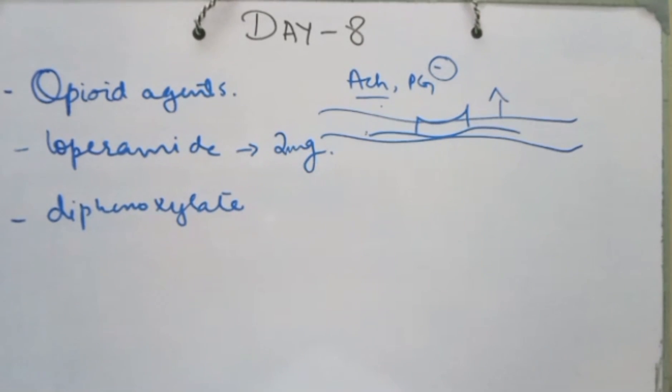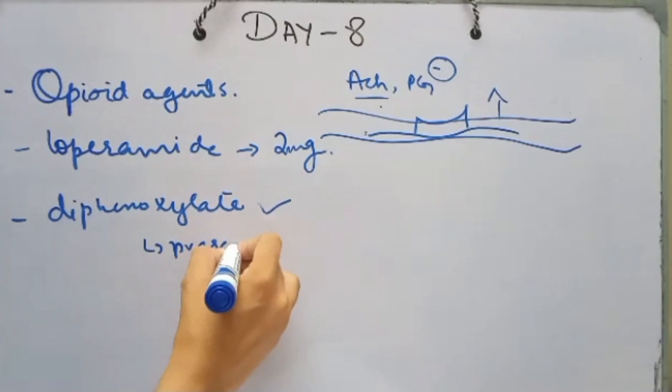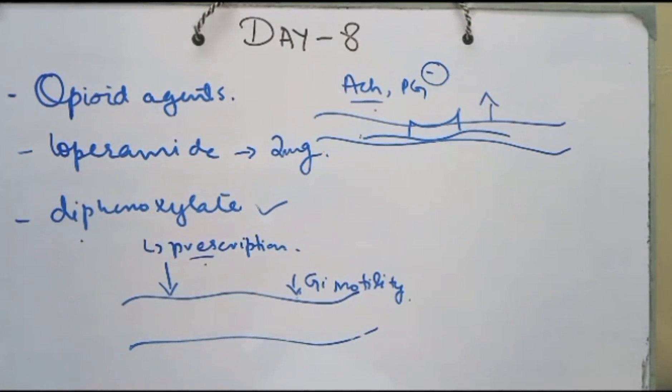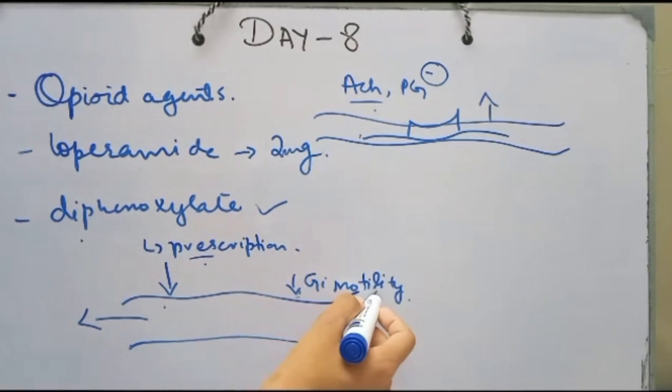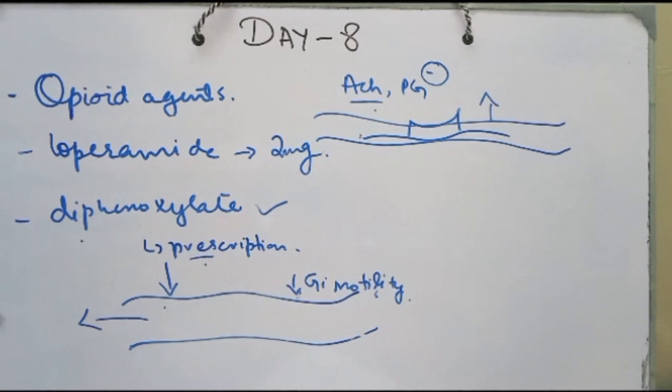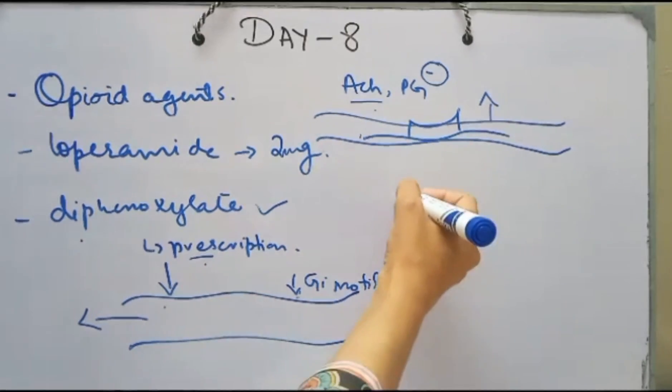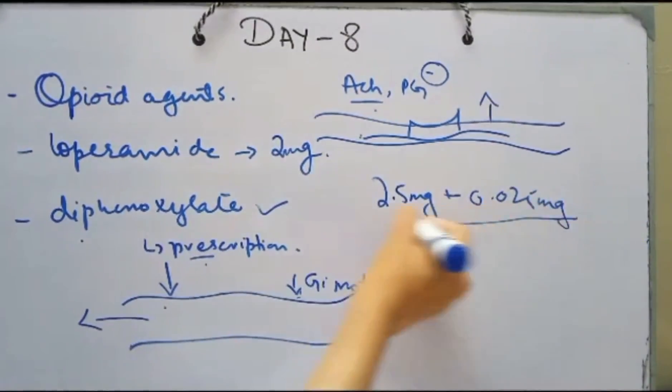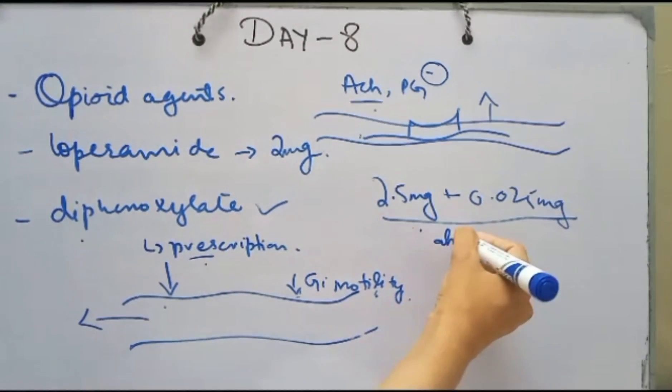We use it one to four times daily. Diphenoxylate acts on the smooth muscles of the intestine and decreases motility and excessive GI propulsion. Its commercial preparation contains diphenoxylate 2.5 milligrams plus atropine 0.025 milligrams in combination.